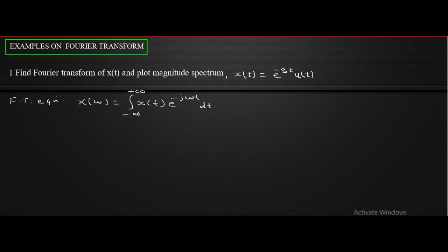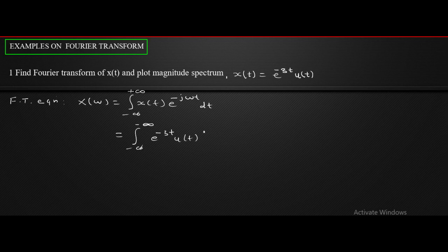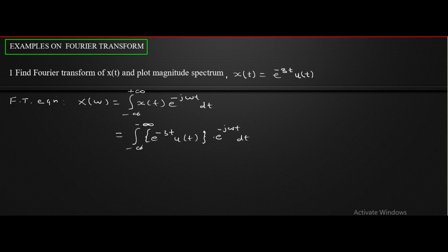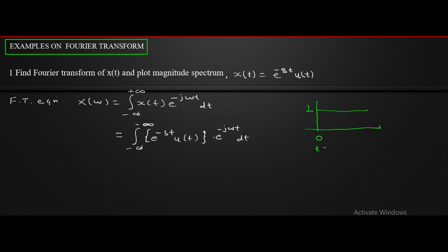How do we find the limit of integration? We substitute the given x of t. This becomes e raised to minus 3t, u of t, multiplied by e raised to minus j omega t, dt. Because of the presence of u of t, the signal starts at 0. The unit step function u of t is 1 from t equal to 0 to infinity.